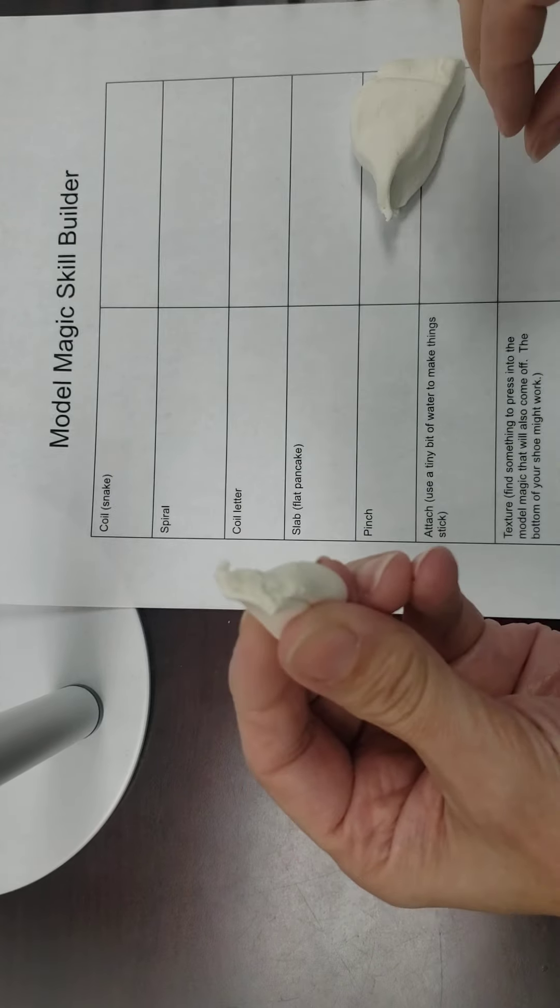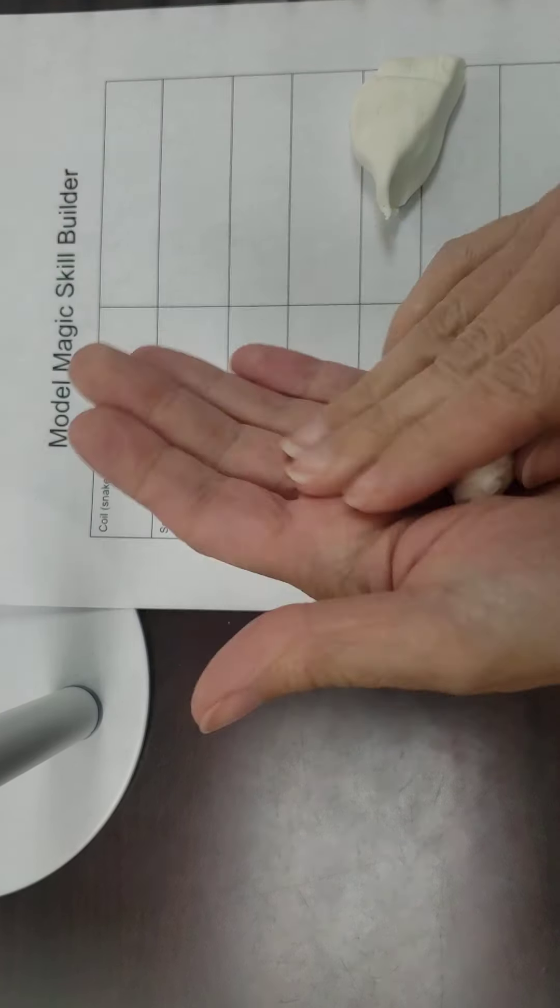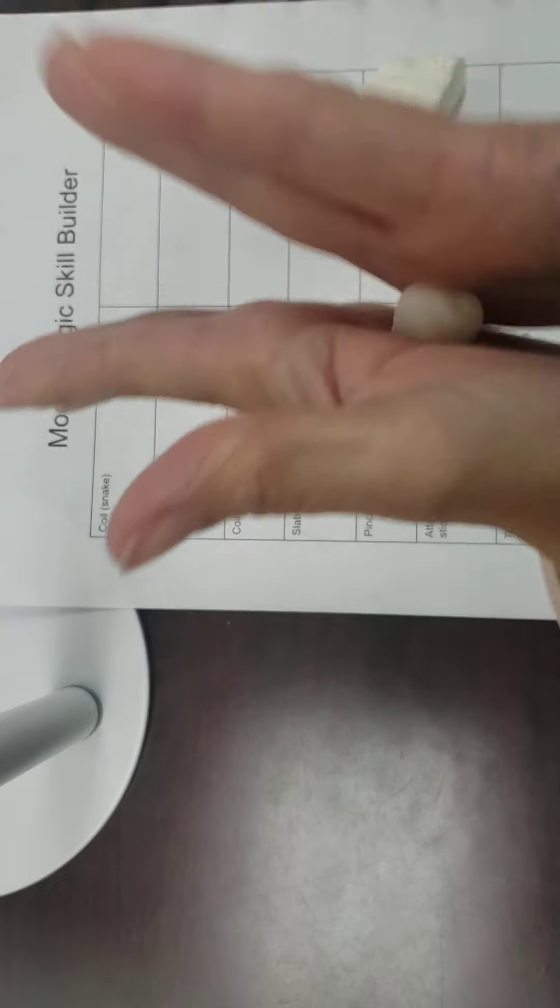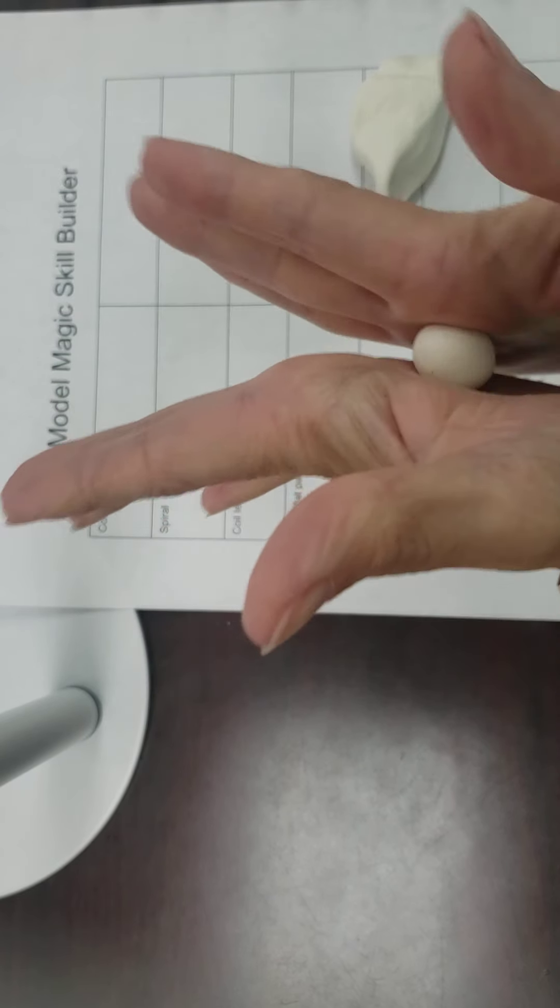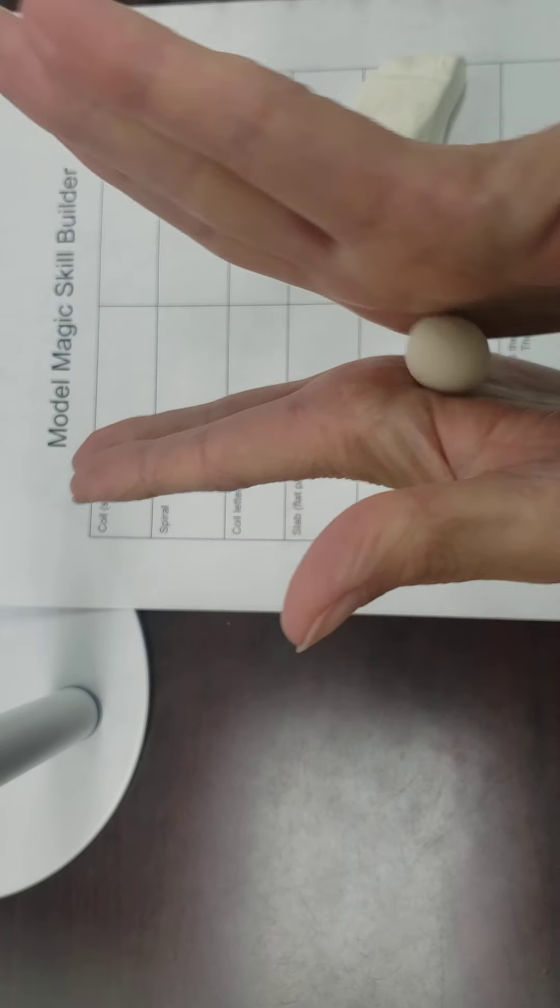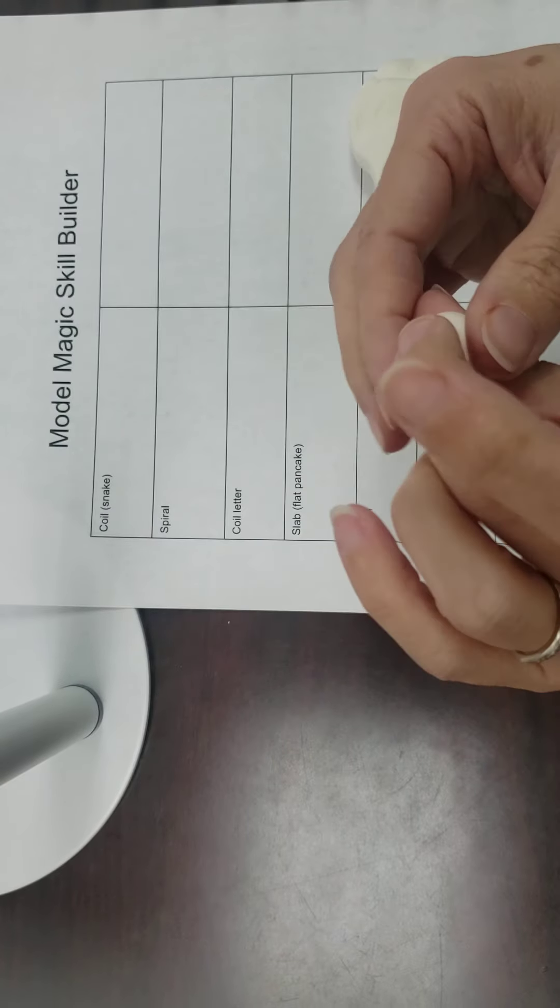The first one is simply a coil, which is sort of like those snakes that you've probably made since you were little. You always want to start everything off with a nice smooth round ball of clay, so I'm just rolling this in my palms to get it nice and smooth.